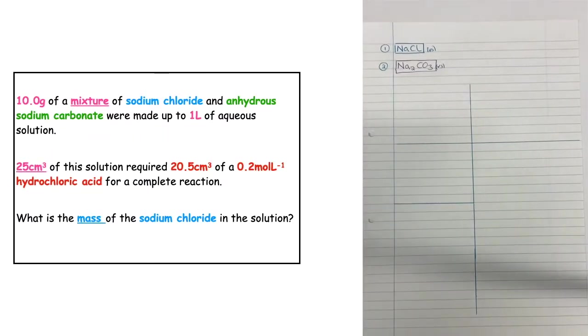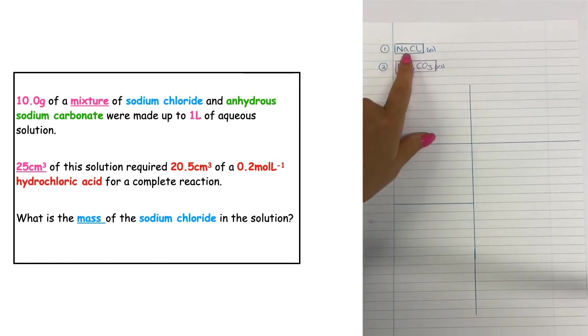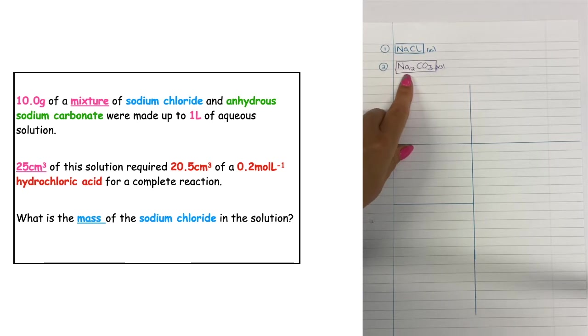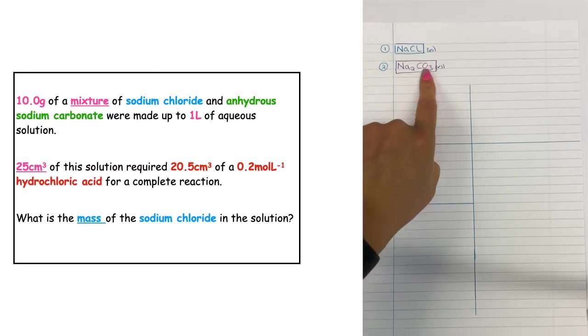In this question we want to work out the mass of a particular substance. It wants us to calculate the mass of sodium chloride when it's mixed with sodium carbonate. Now the issue that we've got here is we have two very soluble substances, so they are able to dissolve in water.